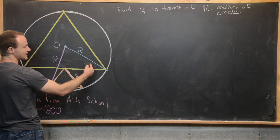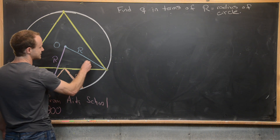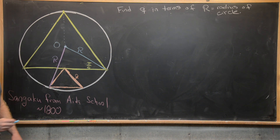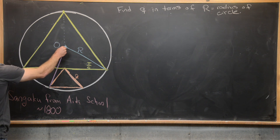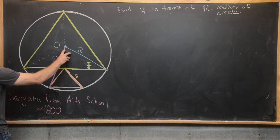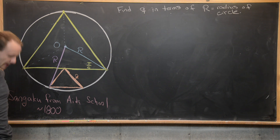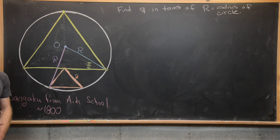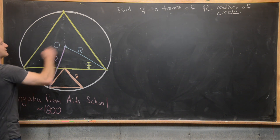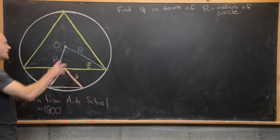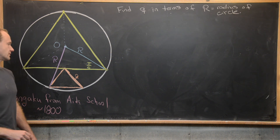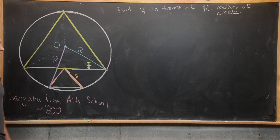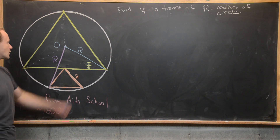Next, I want to identify this angle measure, which is going to be 30 degrees or pi over 6. We can add line segments from the center O to each vertex of the large equilateral triangle. This splits the equilateral triangle into three smaller triangles. By the side-side-side theorem, they are all congruent — they share sides of the larger triangle and all have length R. That means two equal angles at the center add up to 60 degrees, so each is 30 degrees or pi over 6.